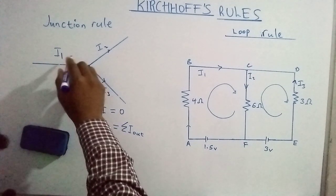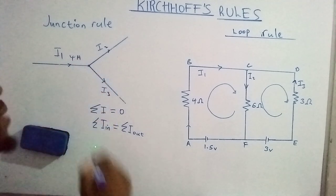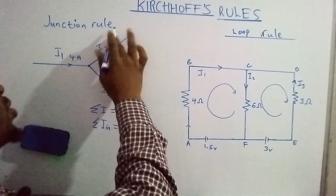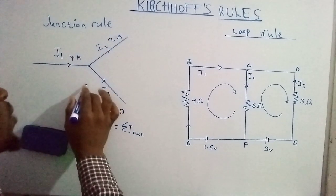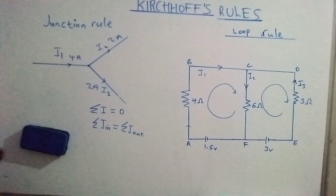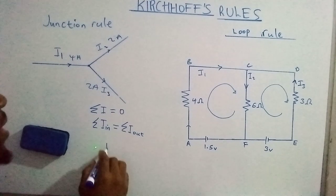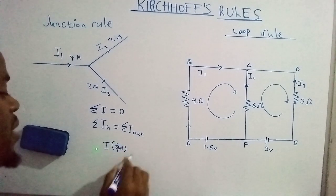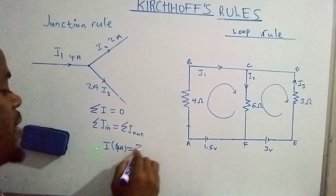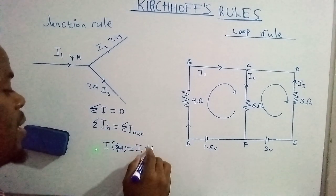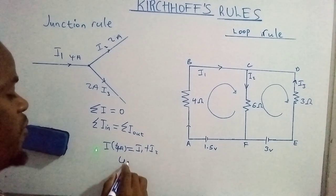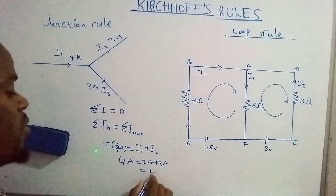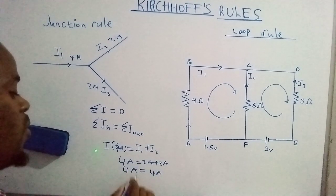For instance, if the main current approaching the junction is four amperes, then when it splits into two branches, each branch will carry two amperes. So we can write: the main current — four amperes — equals current one plus current two, which is two amperes plus two amperes. Both sides give us four.